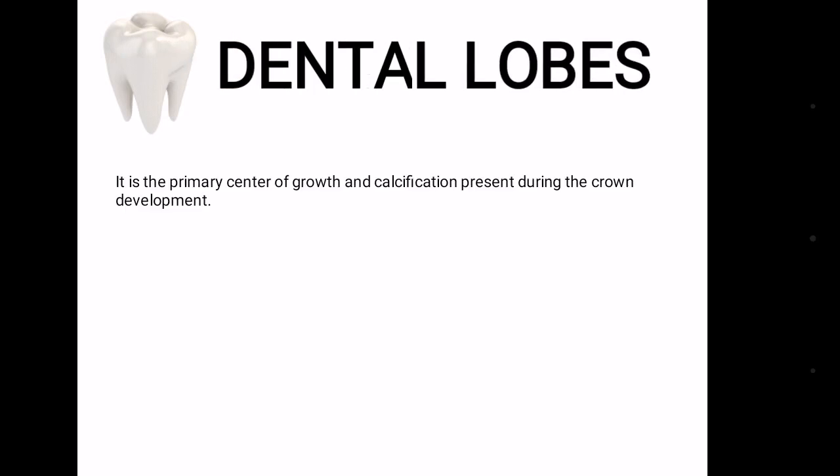Dental lobes are the primary centers of growth and calcification present during crown development. These lobes mature into cusps, mamelons, and cingulum.